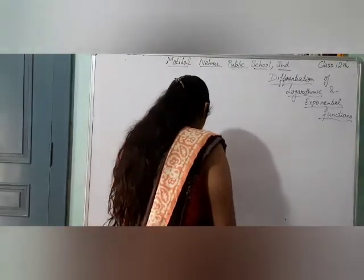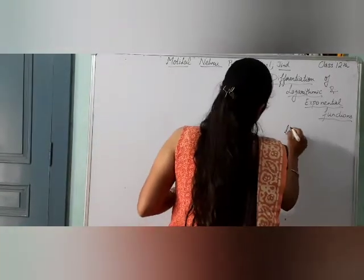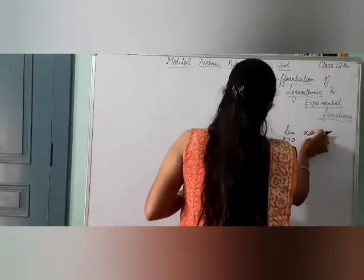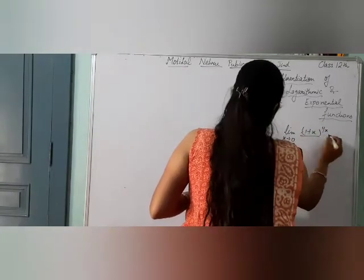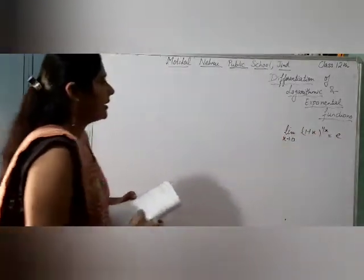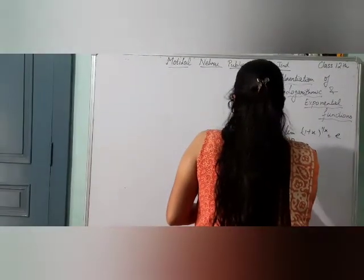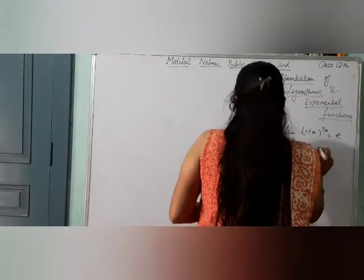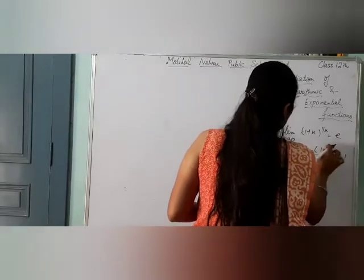First of all, let's start with some limits of logarithmic functions which we have from class 11. The first limit: as x tends to 0, (1 + x) raised to power 1/x is equal to e. Next, limit as x tends to 0 of log(1 + x) divided by x is equal to 1.